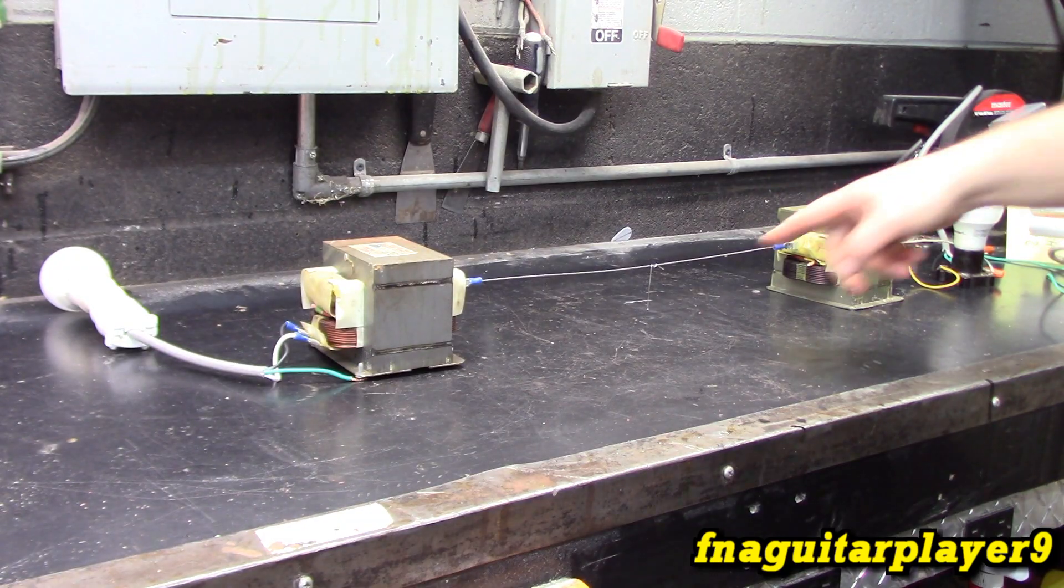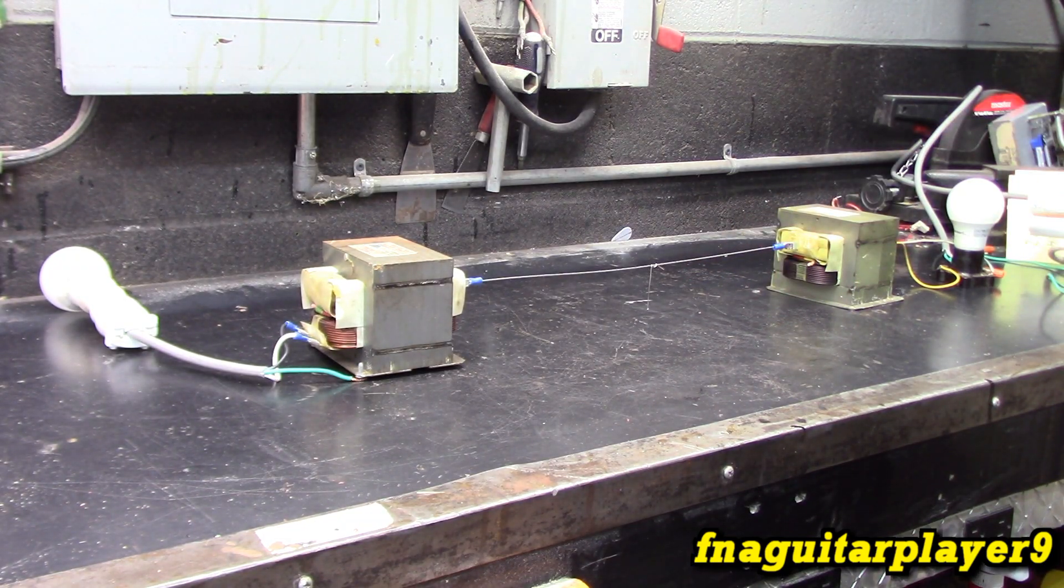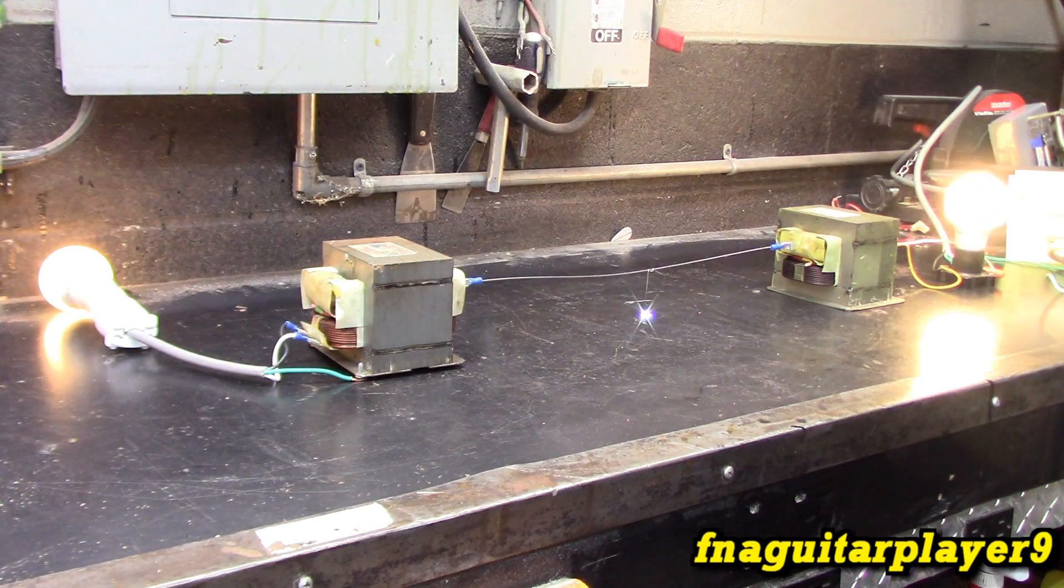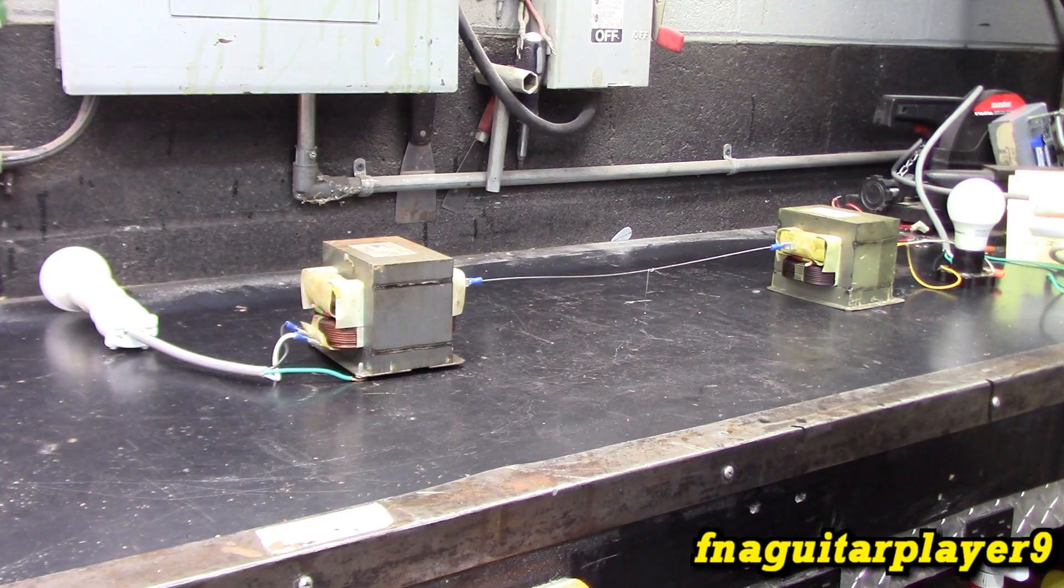So you've seen it arc through there and it started melting the wire. But this light stayed on and that one went off. And kicked the breaker.